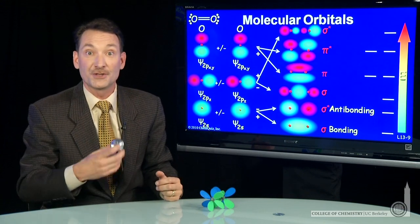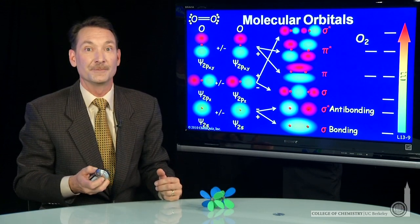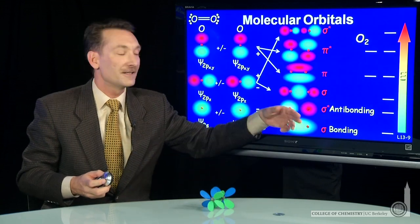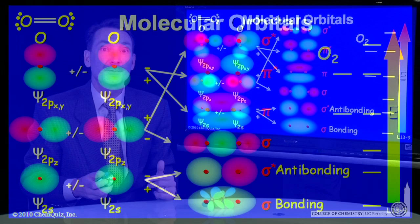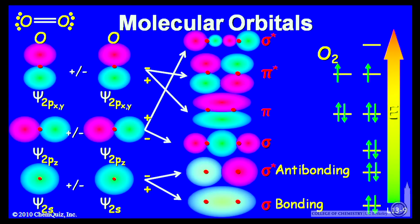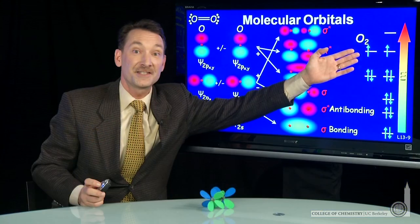I need to fill those with the 12 valence electrons from oxygen. So O2 has 12 valence electrons. I use my Hund's rule, my Pauli exclusion principle, to fill up the molecular orbitals with 12 electrons. When I do, I find this kind of configuration.